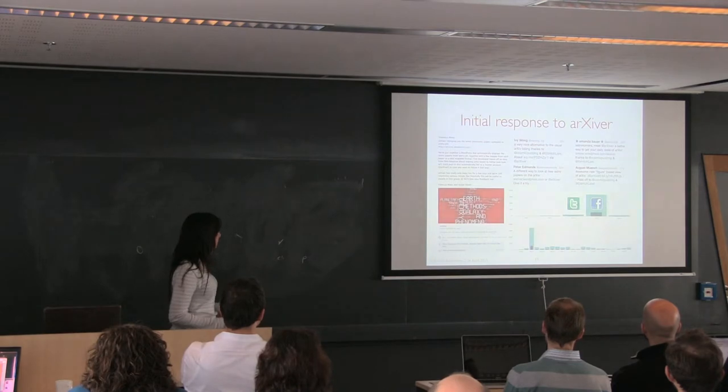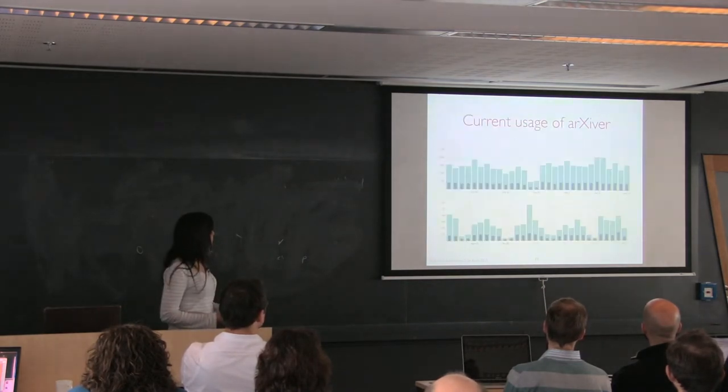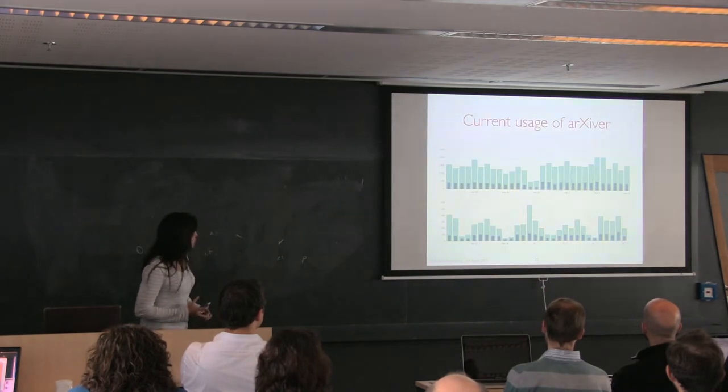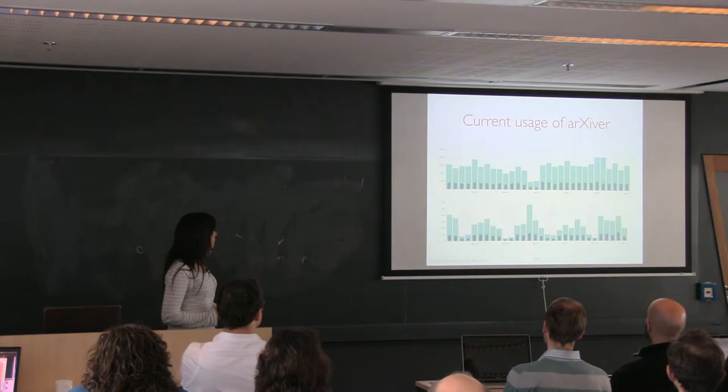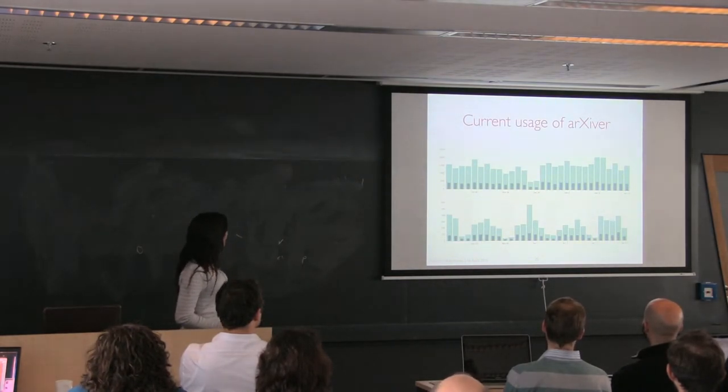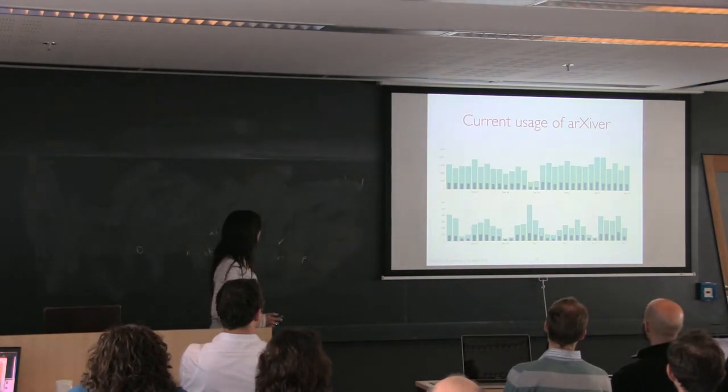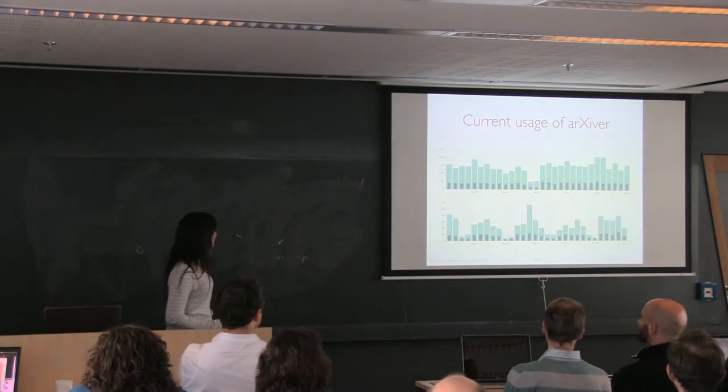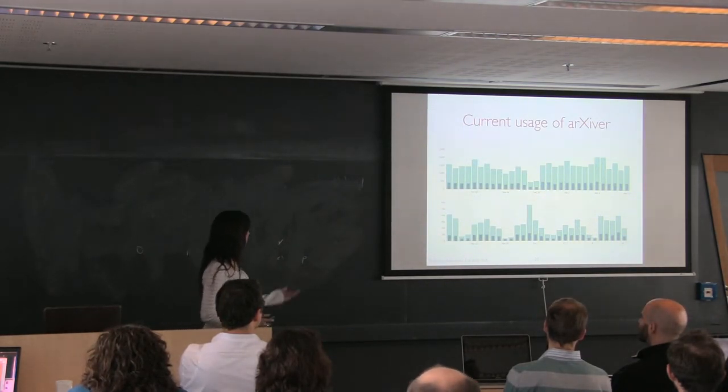This is our current usage. The light blue is views, the dark blue is visitors. We're pretty happy that it's fairly consistent and that most astronomers stopped doing work on the weekends, but not all. I don't know why April 1st, maybe people expected us to do something funny, but we failed. April 1st had a big surge in views, but nothing exciting happened there.